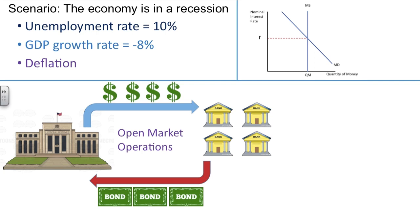With open market operations, there is an increase in the amount of money or liquidity in the banking system. Essentially, the bank's reserves are increasing as the Fed works to pump money into the economy. The hope is that the banks will then take that money and lend it.